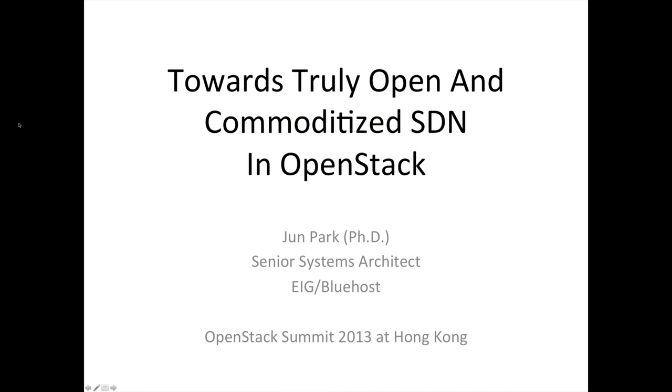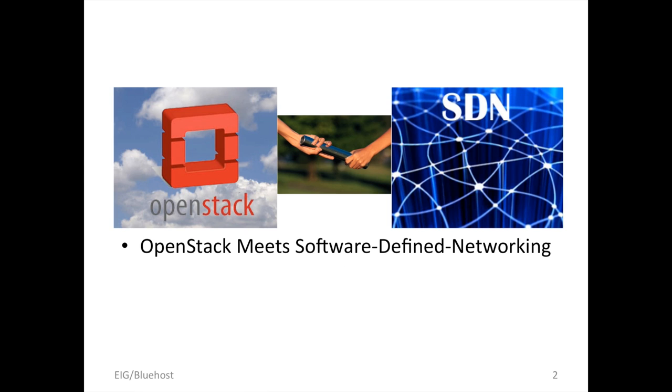From this title, there are some interesting keywords: truly open, commoditized, software-defined networking, and OpenStack. I think there are two important keywords: OpenStack and SDN, Software Defined Networking. Now, finally OpenStack meets SDN, and SDN finally meets OpenStack. I think that's all about the Neutron project.